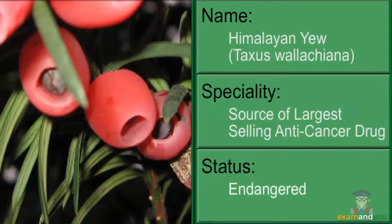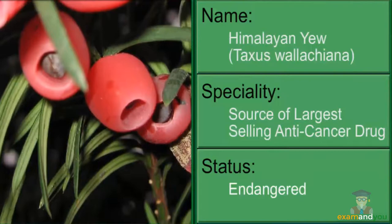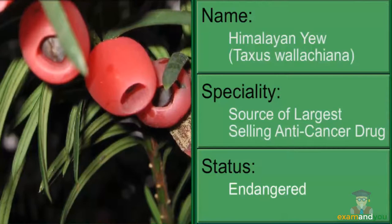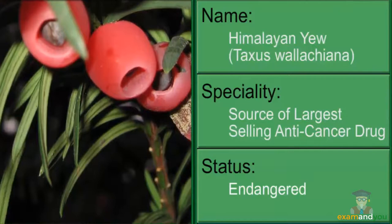Here is the Himalayan yew, a medicinal plant found in Himachal Pradesh and Arunachal Pradesh. The bark, needles, and roots of this plant yield a substance called taxol, which is used to treat several types of cancer. Thousands of Himalayan yew trees have dried up in the last decade due to over-exploitation, and today the species is endangered.